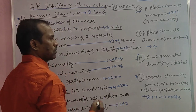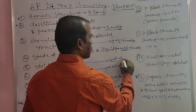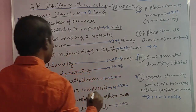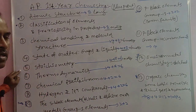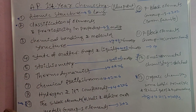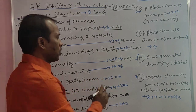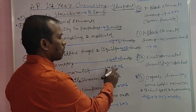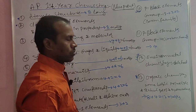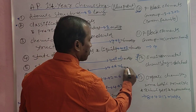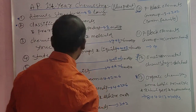The fifth topic is Stoichiometry, which also carries 6 marks — one short answer and one very short answer, totaling 6 marks. The sixth topic is Thermodynamics, which also carries the same 6 marks, with one short answer and one very short answer. Total marks here: 6 marks.